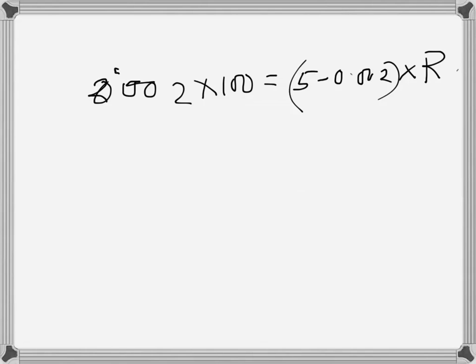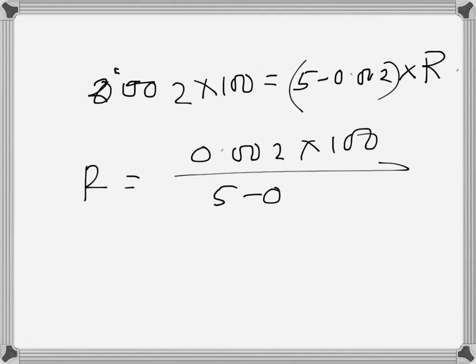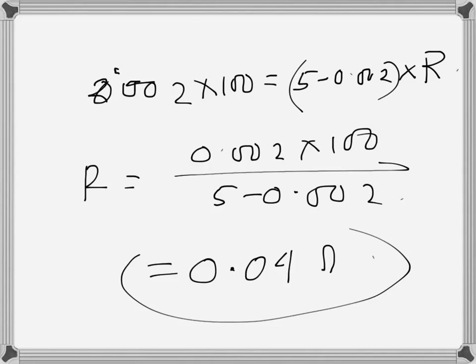So the formula will be like this: 0.002 times 100, and then this is 5 minus 0.002. And if we do it, it is 0.04 ohms. So this is the shunt resistance that is needed.